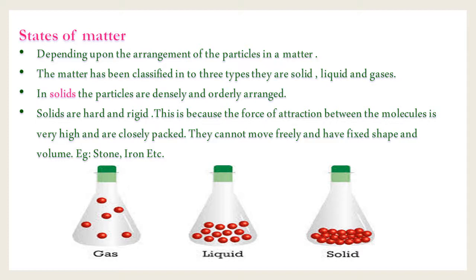In solids, the particles are densely and orderly arranged. Solids are hard and rigid because the force of attraction between the molecules is very high and they are closely packed with each other. They cannot move freely from one place to another, and they have a fixed shape and volume. Examples: stone, iron, etc. Observe the images — the right-side image shows a solid.